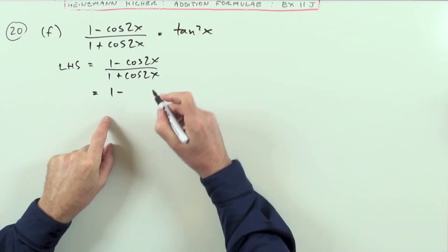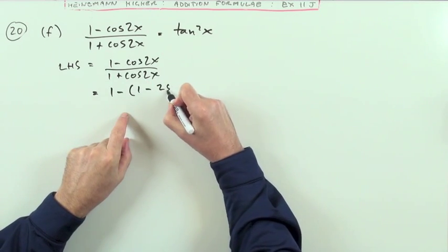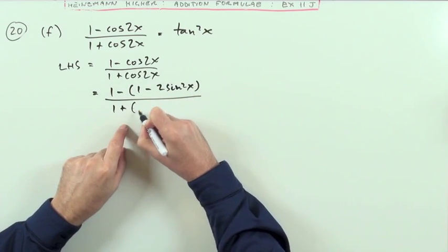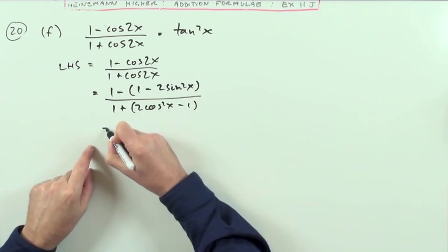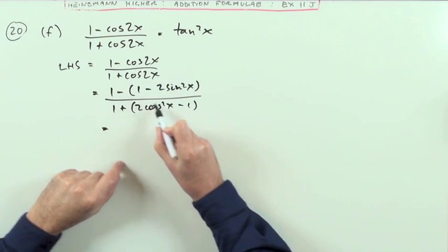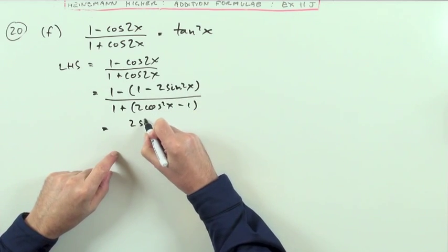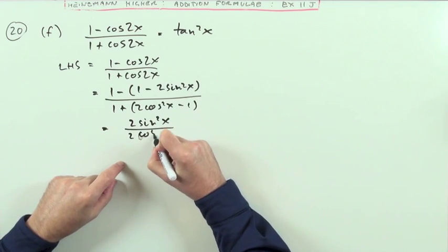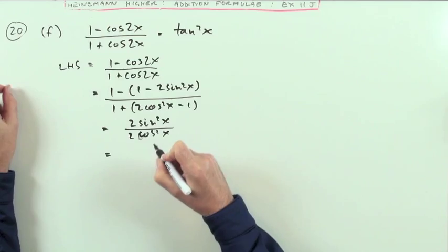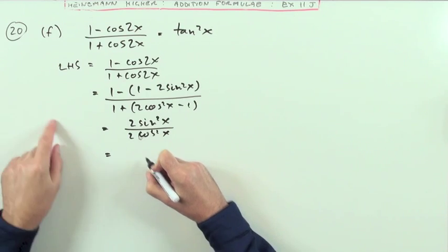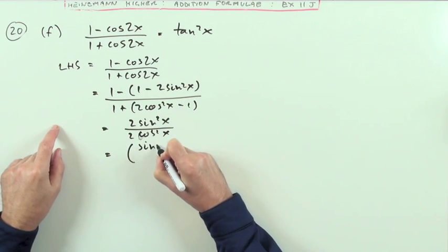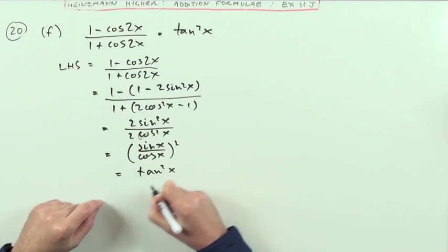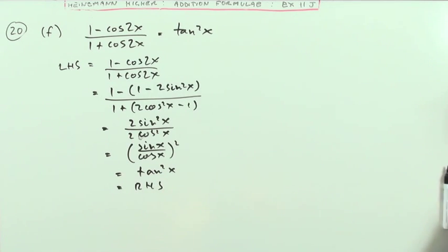So, what I'll do for the top. So, the top one, if I want it in the form of sin squared, that's going to be 1 minus 2 sin squared single x. And, if I want a cos to appear underneath, I'll make that in the form of 2 cos squared minus 1. Then, I'm going to tidy these up. 1 minus 1 disappears. That'll be positive 2 sin squared x. The 1 and the 1 will cancel out, leaving 2 cos squared x. The 2's will cancel, leaving sin squared x over cos squared x. I'll just show it that way. Sin squared x over cos squared x, which is tan squared x, which is the right-hand side.